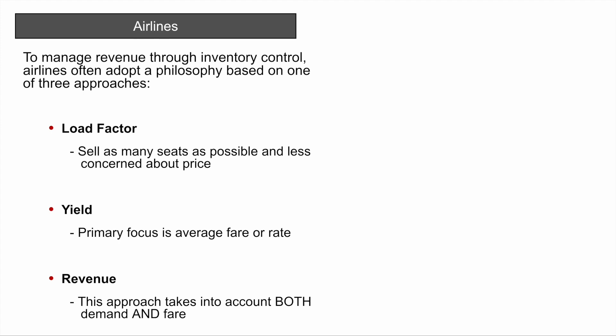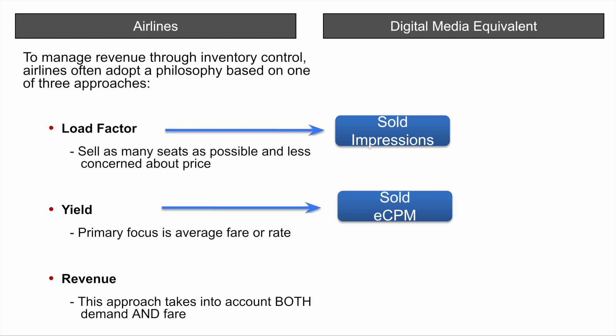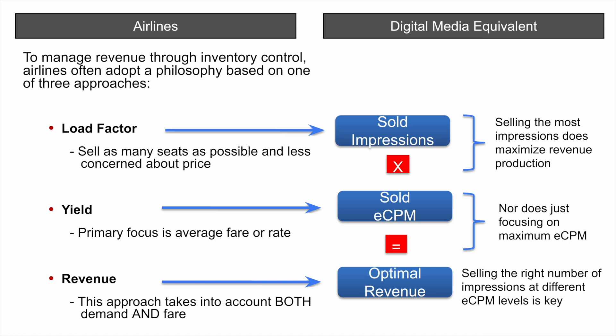Now let's compare against digital media. In digital media, the equivalent of seats are the number of impressions that are sold. The digital media equivalent is: let's try to sell out all the ads on a page and make sure that we're not running any house ads. The equivalent of price for the airline industry in digital media is the sold eCPM — effectively, what is the pricing from the ads that we're getting on each of the pages? What we want to focus on is the optimal revenue from the cross combination of maximizing impressions and the price sold for those.